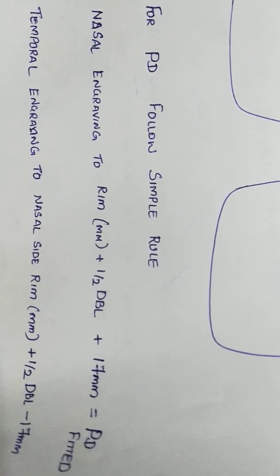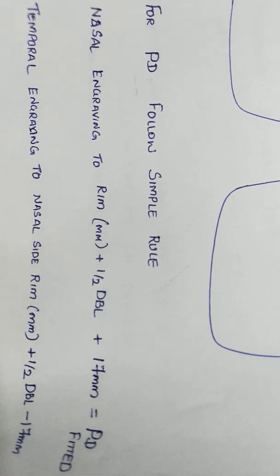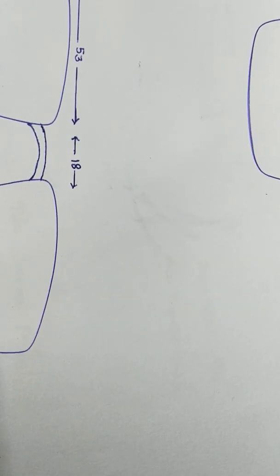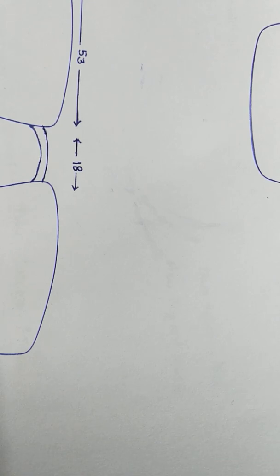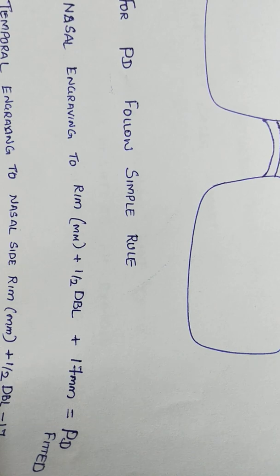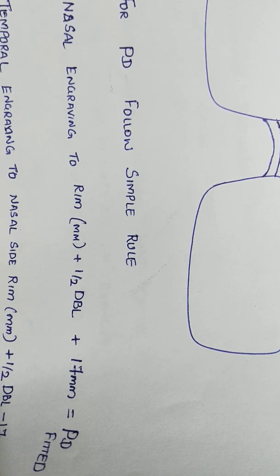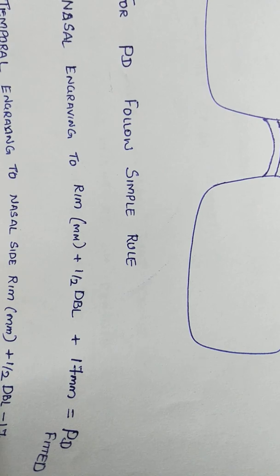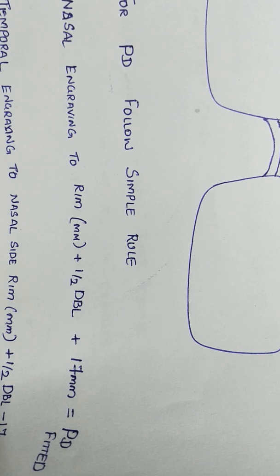Then we have to apply a very simple formula which will be: nasal engraving to the rim, as I said it was 6 mm, plus half of the DBL. DBL here is 18 mm, which is 6 plus 9, which will be 15, and plus 17 mm. 17 mm is exact half of the distance between the micro etchings. Now when you add 6 plus half of the DBL which is 9 plus 17 mm, it comes to 32, and that is your PD fitted.